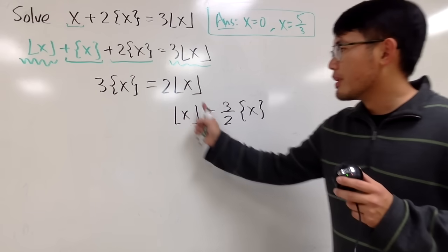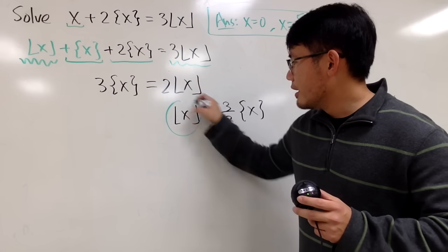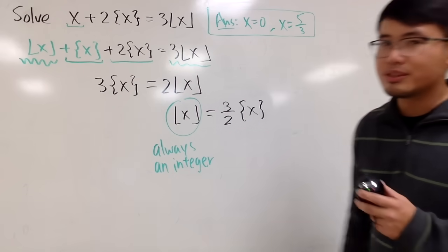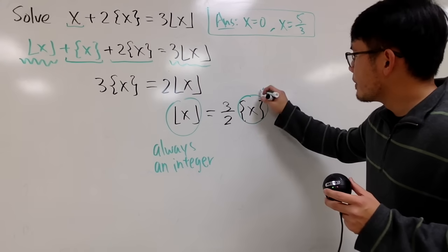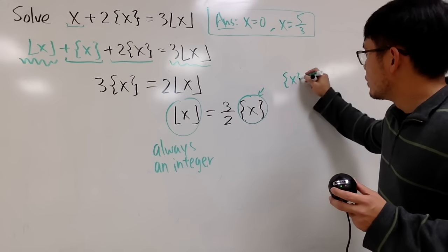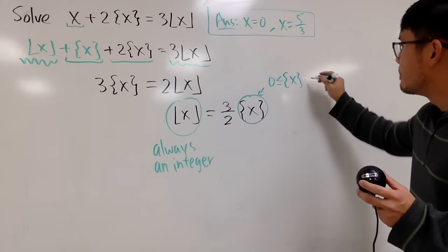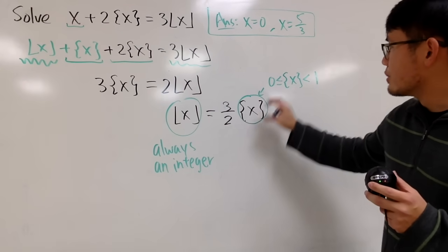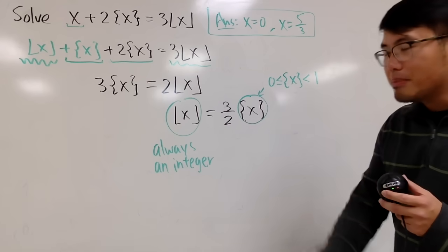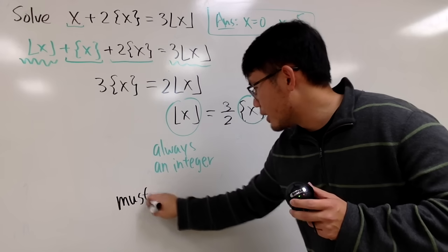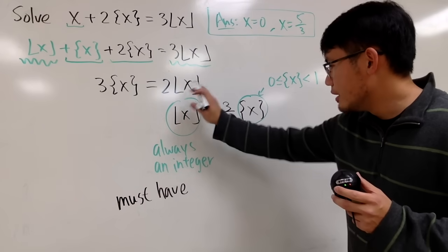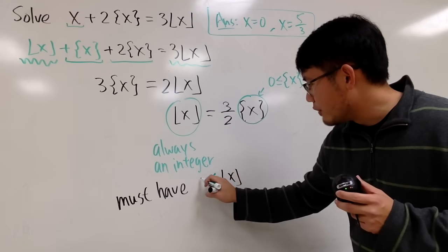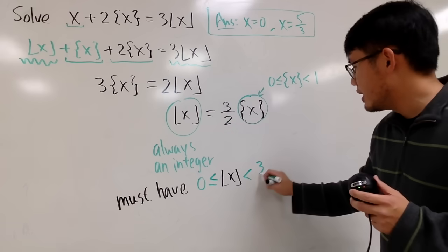Why do I want to do that? Because the floor of x always has to be an integer — positive or negative whole numbers, or maybe even zero. And the fractional part of x is always in between zero (inclusive) and strictly less than one. So here we have an integer equal to three over two times a value in the range from zero to one. That means the floor of x must be in between zero and less than three over two.